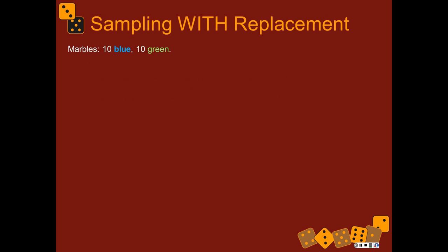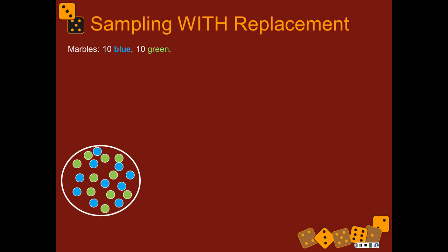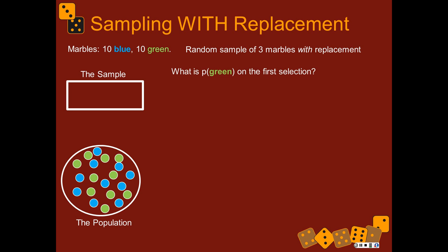Sampling with replacement can be thought of as having ten blue marbles and ten green marbles in a bowl you can't see into. Blindfolded, you're going to sample three marbles with replacement. Sampling three with replacement means you select one — what's the probability of getting a green one on the first selection? There are ten green ones and 20 total marbles, so it's 10 divided by 20, which is 0.5.